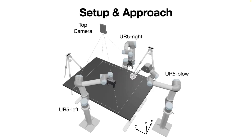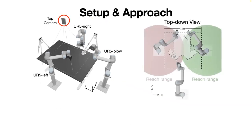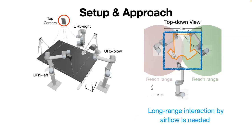Here is our system design of DexAIRity. It consists of three UR5 arms: two with grippers and one with an air pump. Since we do not require high-speed movement, these robots could be replaced with slower and cheaper types — we don't need high-quality UR5s. Visual observation is captured by a top-down Kinect camera. None of these robots can individually cover the entire workspace, even the surface of a fully unfolded cloth, so long-range interaction by airflow is a natural fit for this challenging task.